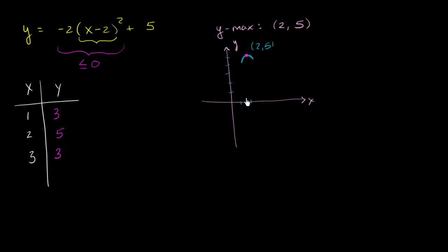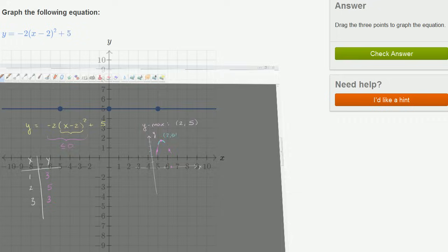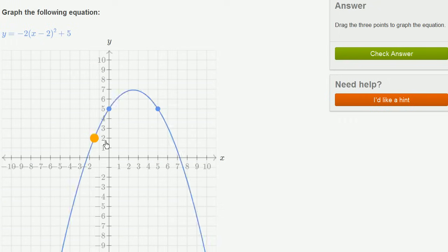So we have three points. We have the point 1 comma 3, the point 2 comma 5, and the point 3 comma 3 for this parabola. So let me go back to the exercise and actually put those three points in. So we have the point 1 comma 3, we have the point 2 comma 5, and we have the point 3 comma 3, and we have now fully determined our parabola.